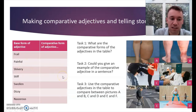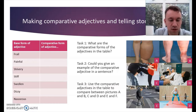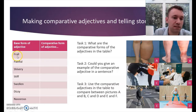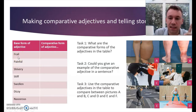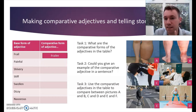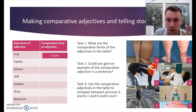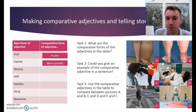We've got more examples — what we need to improve is practice, practice, practice. 'Frail' — what's the comparative form? It's just one syllable, therefore 'frailer.' All one-syllable adjectives form a comparative with ER. 'Painful' — two syllables, does not end in Y — 'more painful.'